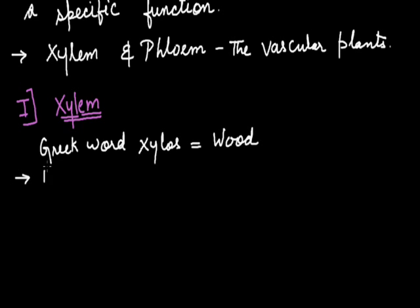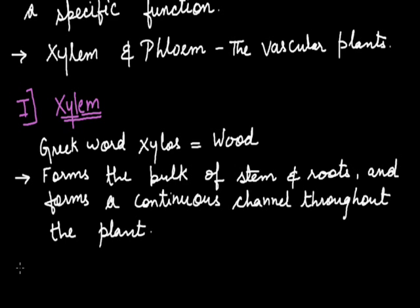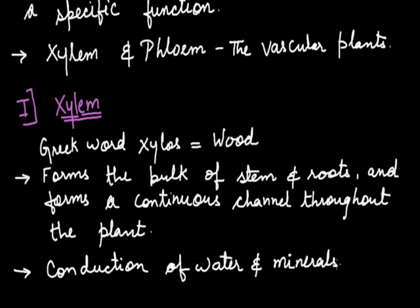It forms the bulk of stem and roots and it forms a continuous channel throughout the plant. What are the main functions of xylem? The primary function of xylem is conduction of water and the minerals. It basically performs conduction of water and minerals from the root to the upper part of the plant, i.e. leaves. It also provides mechanical support or strength to the plant.